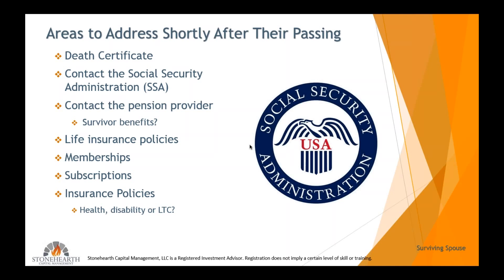The first thing you need to do is obtain death certificates. Most financial institutions, and to change title and ownership of things, most organizations are going to require a death certificate. As a general rule, five to ten copies is usually sufficient. You typically get these through the funeral home, although your attorney can help you.